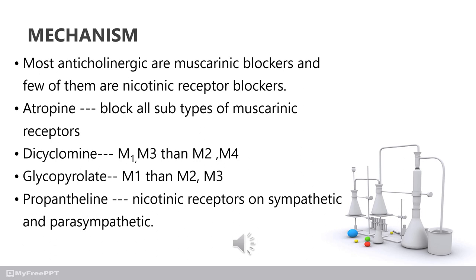Dicyclomine selectively blocks M1 and M3 receptors. Glycopyrrolate selectively blocks M1 receptors. In atropine, nicotinic receptors are also blocked, affecting both sympathetic and parasympathetic ganglia.